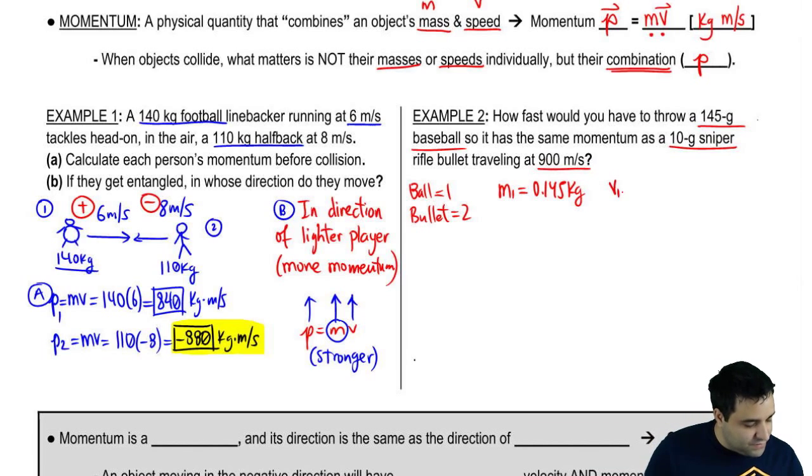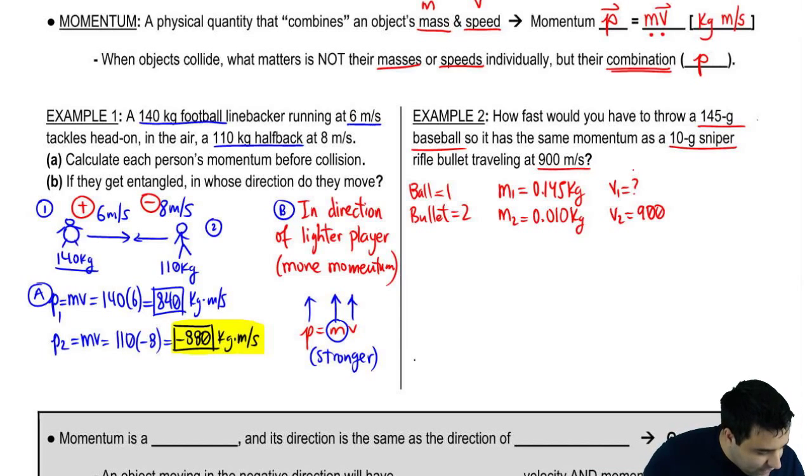And I want to know what must V1 be. I know the information, I have a lot of information about the bullet. I know the mass of the bullet is 0.010. That's 10 grams. And the velocity here is 900. I want to know what is V1 so that the momentum of one equals the momentum of the other. So this is where we're going to start.